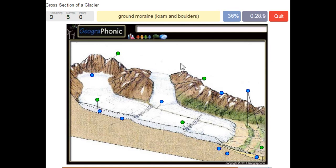Ground moraine, loam and boulders is what we see here. Glacier ice, ice is this under this line.